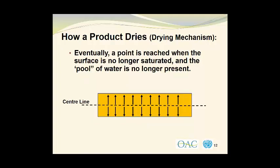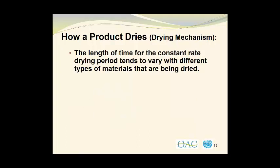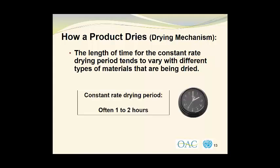Eventually, a point is reached where the surface is no longer saturated and the pool of water is no longer present — the surface is unsaturated. The length of time for the constant-rate drying period tends to vary with different types of materials being dried, but it most often lasts from one to two hours.